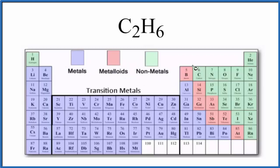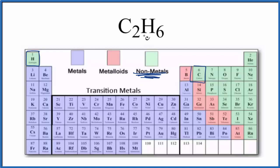So if we find carbon, that's right here, and carbon is a nonmetal. Hydrogen over here on this side is also a nonmetal — it's kind of by itself, but it's a nonmetal. So we have two nonmetals. When we have two nonmetals, we have a covalent or molecular compound. So C2H6 is covalent.